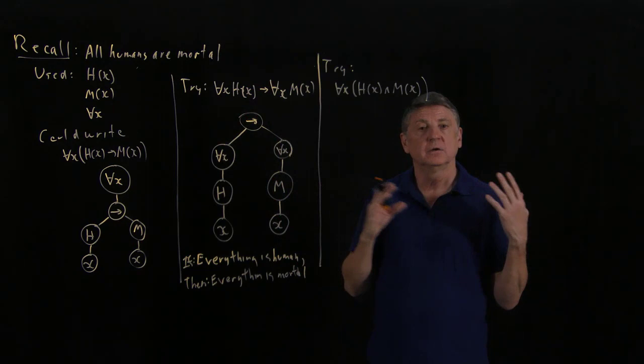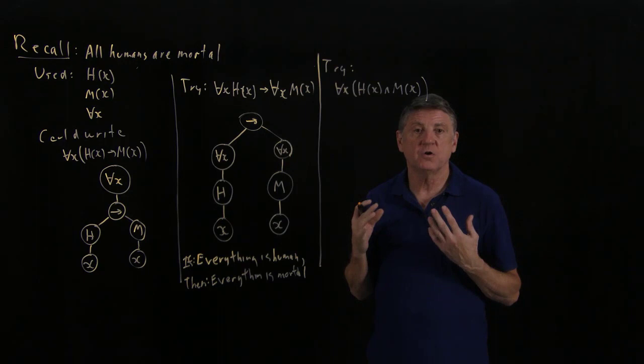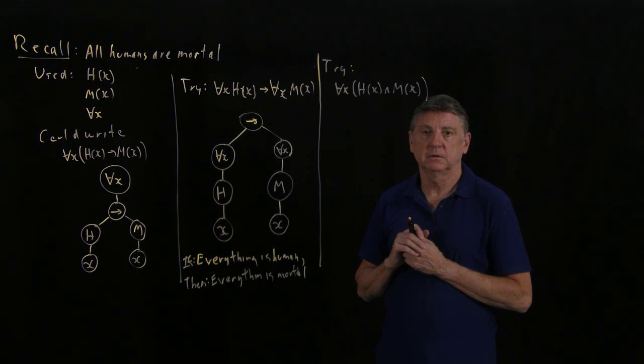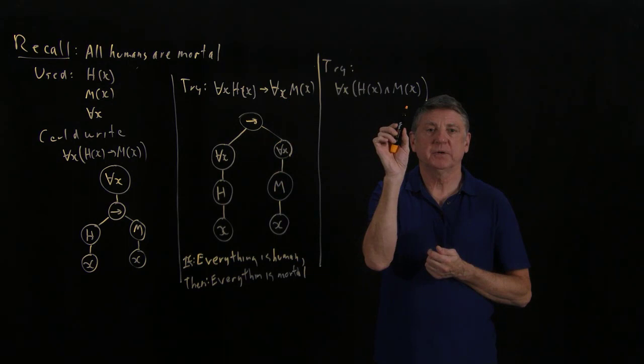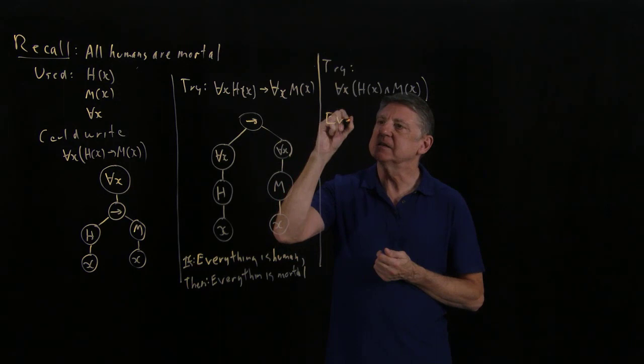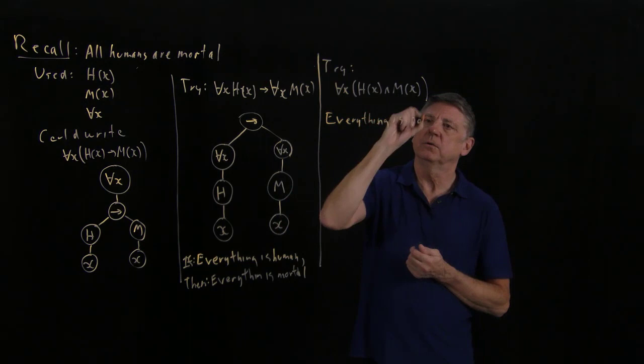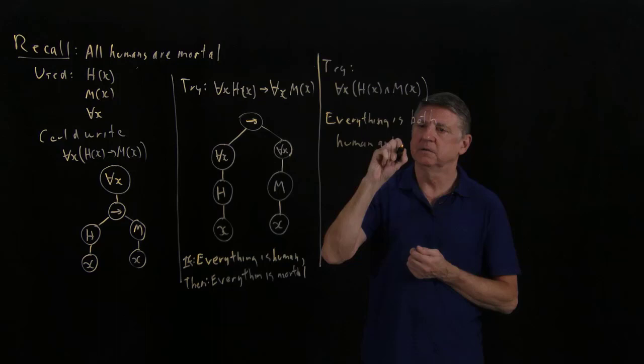Suppose that something isn't human — can we say anything about its mortality? Suppose something is a non-human living being that eventually dies, like a dog. We're unable to capture this correctly with the conjunction. The conjunction version asserts that everything is both human and mortal, and that's not what we mean.